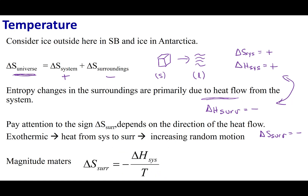In Antarctica, delta H is the same, but the temperature is really low. Dividing by a small T gives a larger delta S of surroundings magnitude. If that negative term becomes larger than the positive delta S of the system, we get a negative delta S universe, meaning a non-spontaneous process — the ice does not melt. Temperature affects how large delta S of the surroundings is, and if it dominates the equation, it can change the spontaneity of the reaction. Stay safe, Chem 1B.